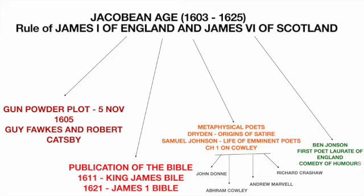The next important event during the Jacobean Age was the publication of the Bible. In 1611 the King James Bible was published, and in 1621 the James I Bible was published. The 1611 King James Bible is said to be the most famous version of the Bible, while the 1621 Bible is said to be the most printed version. Both facts are important — direct questions about them appear almost every other year in exams.